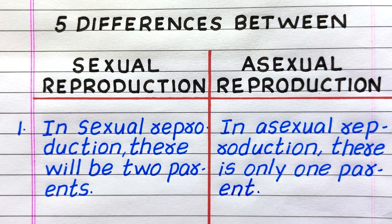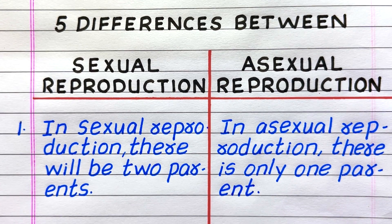First difference: in sexual reproduction there will be two parents, while in asexual reproduction there is only one parent.